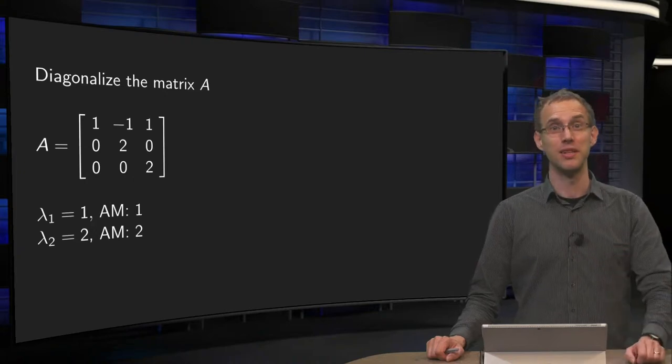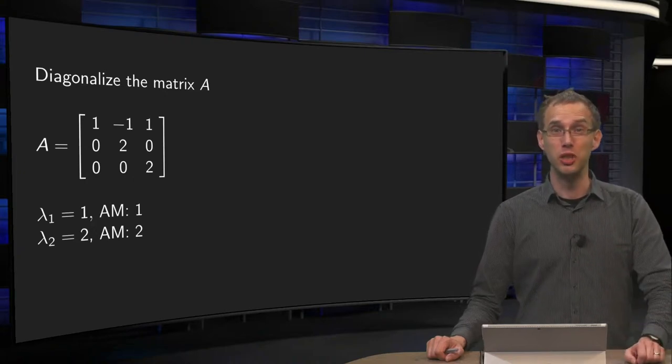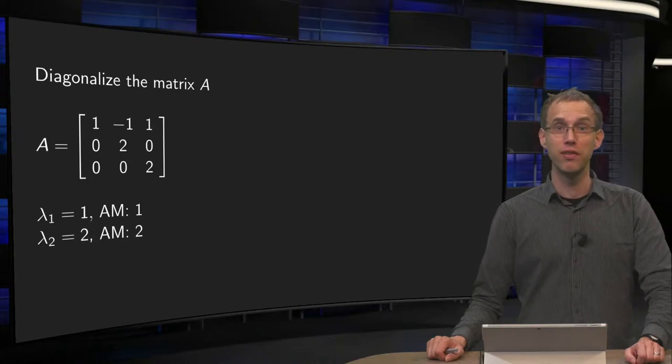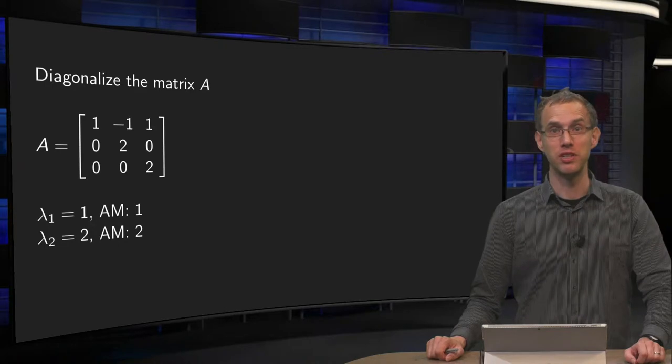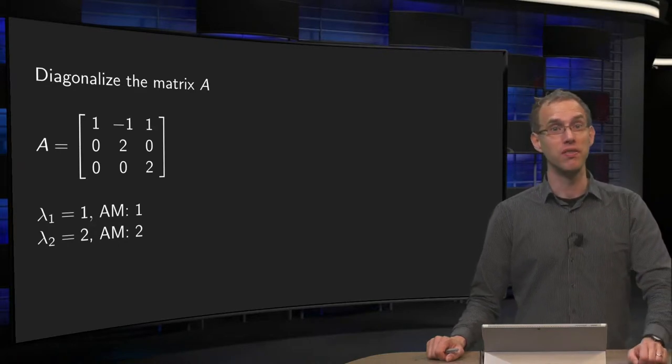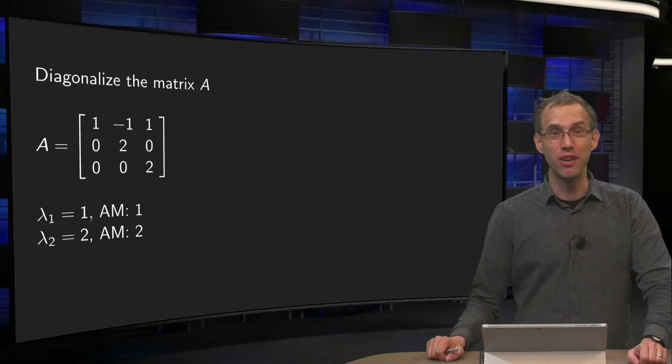We can diagonalize a matrix as long as the geometric multiplicity of every eigenvalue is the same as the algebraic multiplicity. But how does this work if these multiplicities are bigger than 1?